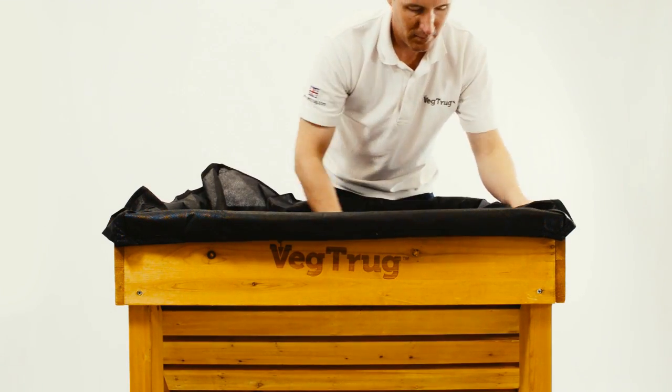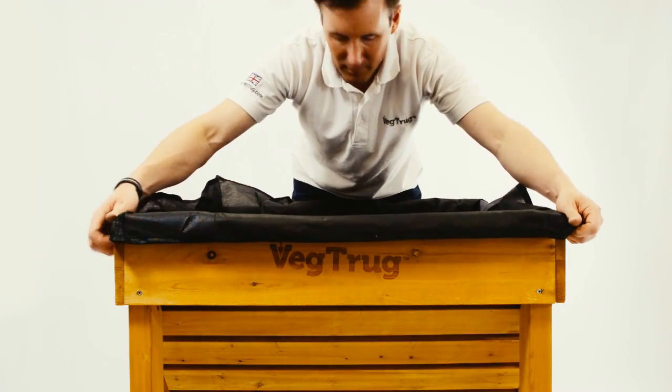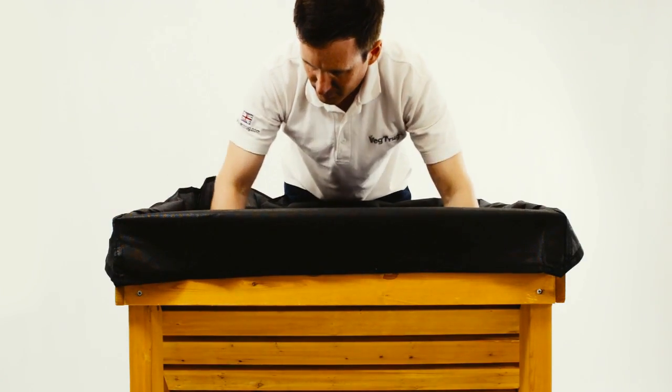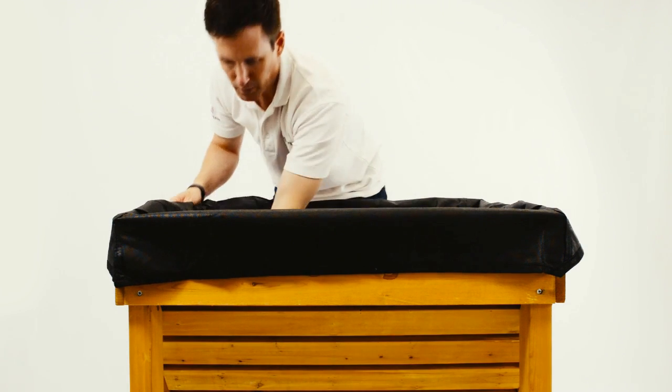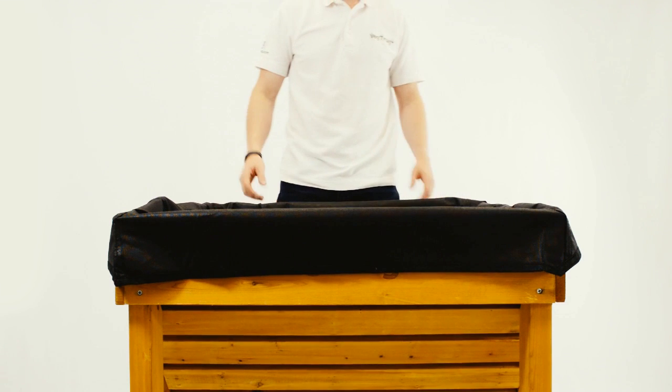After the soil has been placed into the VegTruck, you can undo the drawstring and tuck the liner back down inside the VegTruck. Do not leave it flapping over the edge of the VegTruck. It looks ugly and it will degrade in the weather.